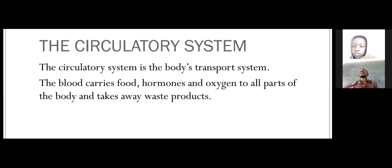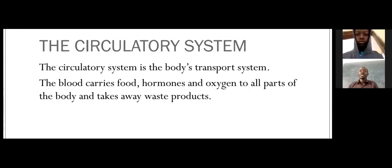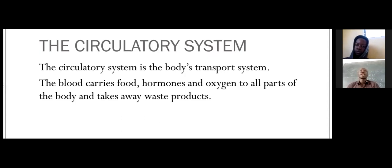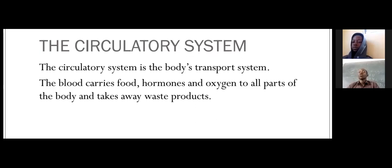The circulatory system is like the transport system of your body. A country has its own transport system: it has roads, power stations, bus stops, seas and oceans through which ships travel, and airlines through which airplanes travel. Similarly, your body has a transport system. It has blood, which carries nutrients, hormones, oxygen, and waste products such as carbon dioxide to different parts of the body.